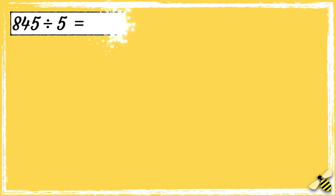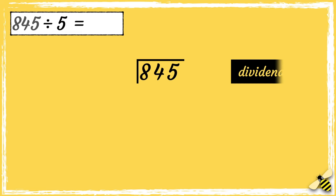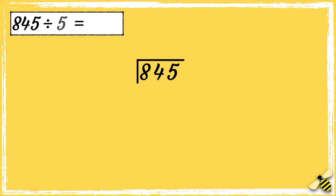Let's have a look at another example: 845 divided by 5. First, we need to draw our bus stop. We put the number that we are dividing — the dividend — inside the bus stop. We put the number that we're dividing it by — the divisor — next to the bus stop.